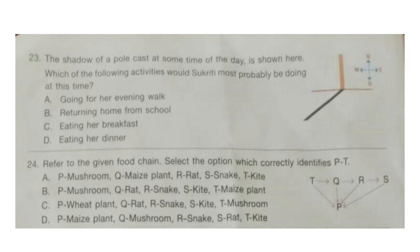Question 24. Refer to the given food chain and select the option which correctly identifies P to T. Look at the options and select your answer. The correct answer is option B. P will be mushroom, Q is rat, R is snake, S is kite, and T is maize plant.